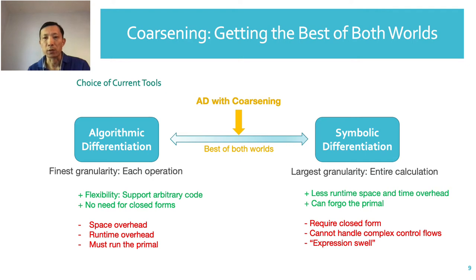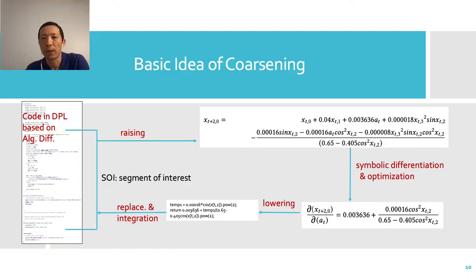Coarsening introduces a new way to do AD by getting the best of both worlds. The basic idea of Coarsening is as follows: In code written in existing differentiable programming languages, it selects some segments of interest or SOIs, raises them to the symbolic level, and also applies symbolic differentiation and optimization, and then lowers it to source code, and replaces the original pullback functions accordingly. It essentially combines algorithmic differentiation with symbolic differentiation.